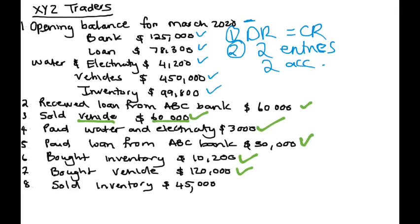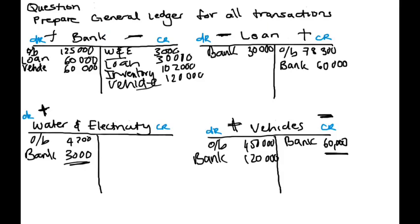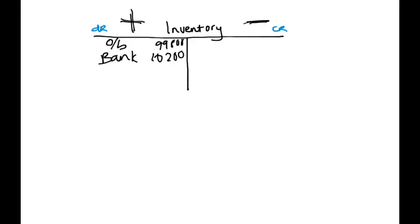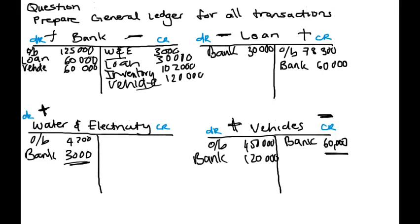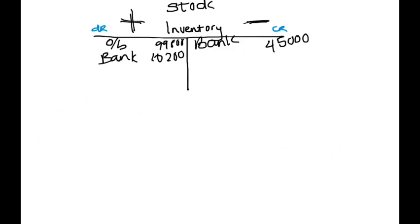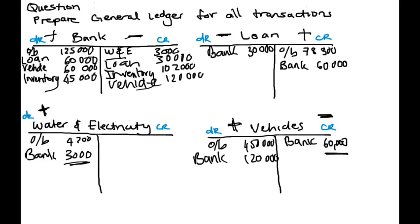Then we sold inventory, $45,000. We sold inventory, so we have less things — less stock. Another word for inventory is stock. So we sold inventory worth $45,000 and we received money in the bank of that $45,000. In our bank, we received that $45,000 because we sold inventory. So we credited inventory and we debited our bank. Every debit is equal to our credit.